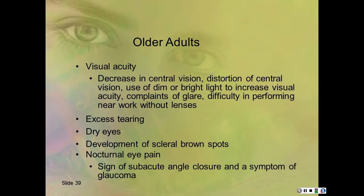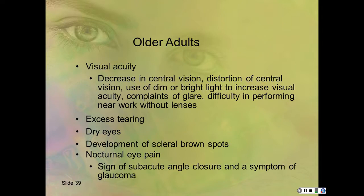In older adults, expect decreased visual acuity in central vision, distortion of central vision, use of dim or bright light to increase visual acuity, complaints of glare, difficulty performing near work without lenses, excessive tearing, dry eyes, development of scleral brown spots, and nocturnal eye pain—which is a sign of subacute angle closure and a symptom of glaucoma. So if a patient says 'I'm sleeping but my eyes hurt,' think of glaucoma first.